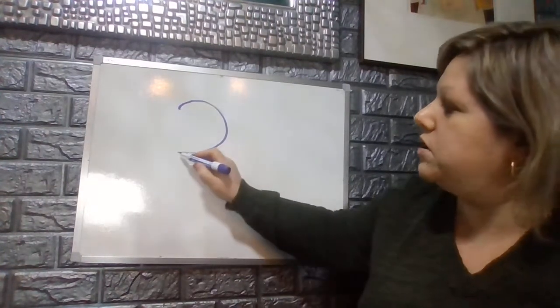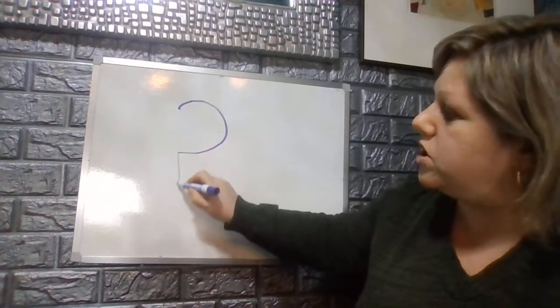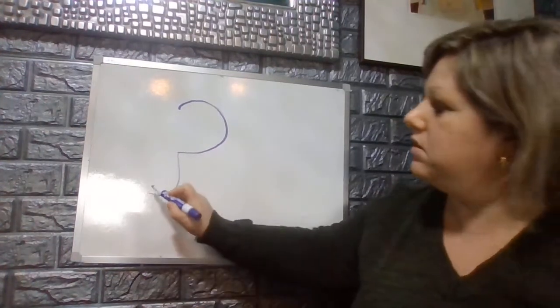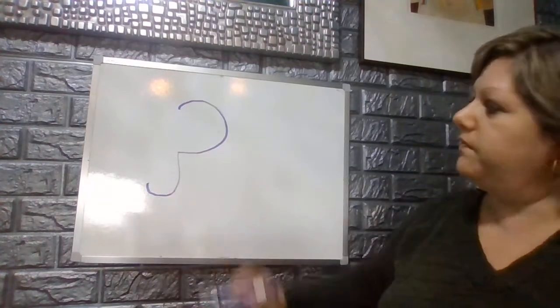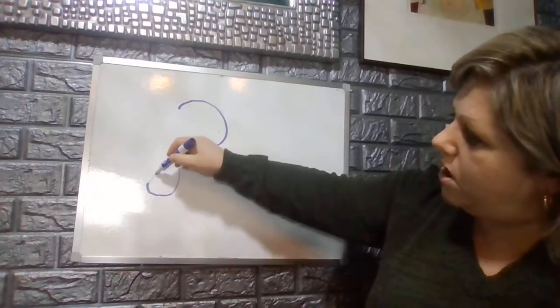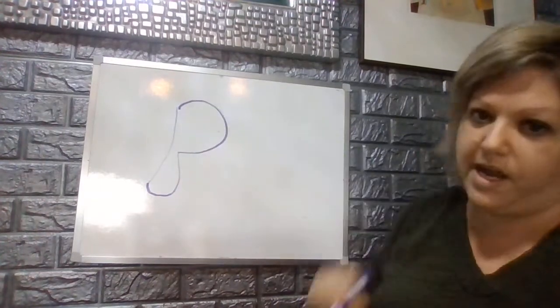Then we're going to make from that C we're going to attach a J. Make sure you attach the letter J to it. Then you're going to pull that J on a curve all the way up.